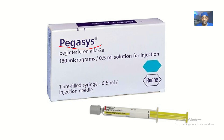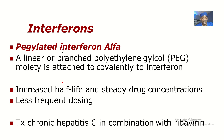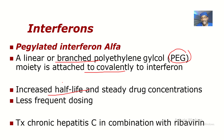The drug comes under the brand name Pegasys. Peg interferon alpha 2a is a linear or branched polyethylene glycol — that's where the name 'peg' comes from — a polyethylene glycol moiety attached covalently to interferon. This gives it an increased half-life and steady drug concentration, requiring less frequent dosing than normal interferon.